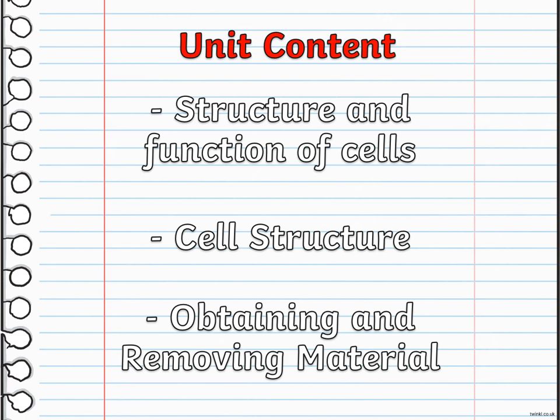Moving to lesson three, which is obtaining and removing material. You are going to develop and use a model to describe how cells obtain energy and remove waste materials through the cell membrane. We are going to talk about how materials move into and out of the cell, and the function of the membrane. We are going to cover passive transport, diffusion, active transport, osmosis, facilitated diffusion, and many more.